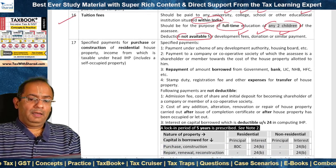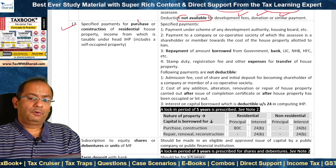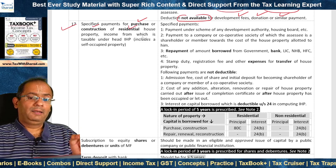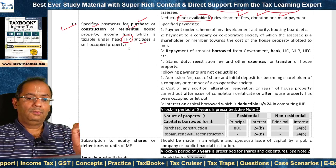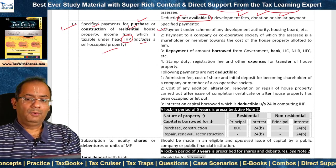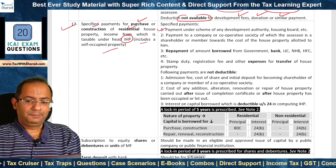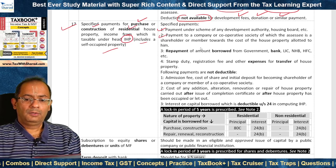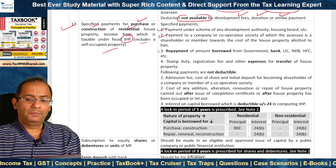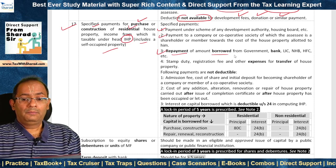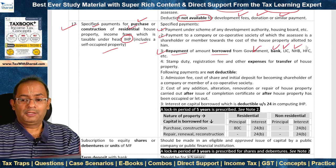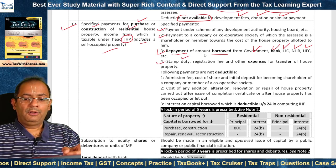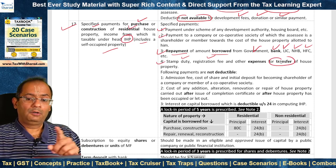Seventeenth, certain specified payments made for purchase or construction of a residential house — not for any other purpose. The condition is that income from such house property should be taxable under the head Income from House Property, and therefore it includes a self-occupied property as well. Specified payments include: payment under scheme of any development authority or housing board; payment to a company or cooperative society of which the assessee is a shareholder or member towards cost of the house property allotted to him; repayment of principal borrowed from the government, bank, LIC, National Housing Bank, or housing finance company; and stamp duty, registration fee, and other expenses for transfer of house property in the name of the assessee.